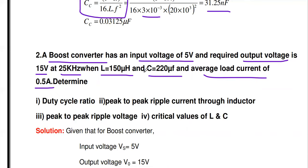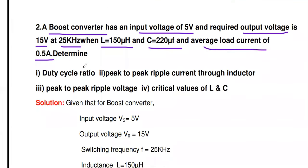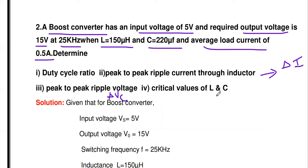Given data for the boost converter: Vs = 5V, V0 = 15V, F = 25 kHz, L = 150 μH, C = 220 μF, I0 = 0.5 A. In this problem, the inductor and capacitor values are given, and we need to find ripple current and ripple voltage — the reverse of the previous problem. We must find duty cycle, ΔI, ΔVc, and critical values of L and C.